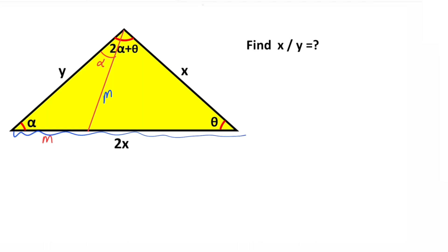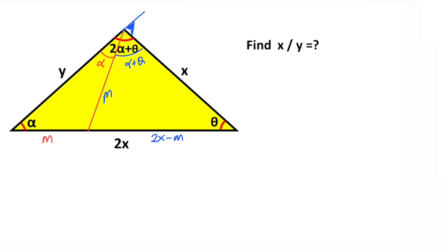Next, we know that this side length equals 2x, that means 2x minus m is left here. Likewise, alpha plus theta is left here. After that, if we extend this corner, notice that two interior angles equal the exterior angle, so here it must equal alpha plus theta. Focusing on these two angles — they are equal — that means this line is an external angle bisector.